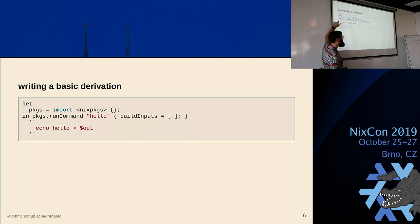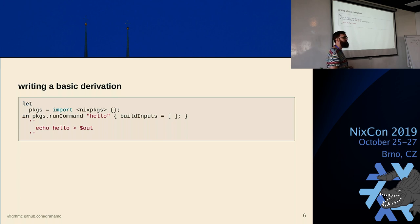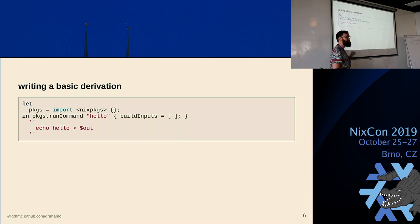Nix is a functional language, so everything needs to return a value. In order for a file to return a value, there's no semicolon at the end. runCommand is defined in nixpkgs.